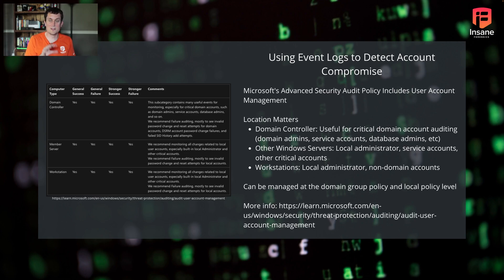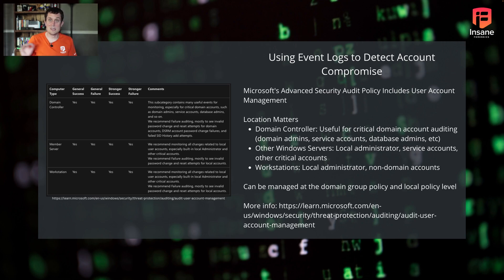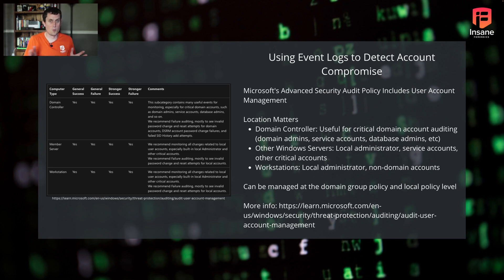On workstations we talked a lot about local users, local admins — accounts that aren't assigned to the domain but that an attacker can still leverage to get on the box. They might use that local account to log into the machine itself. With the right permissions or privilege escalation, an attacker might even use that local account to perform whatever action they're trying to perform. You can manage this advanced auditing of accounts both at the local level and at the GPO level for a policy that goes across your domain.